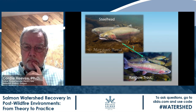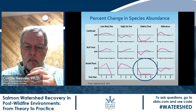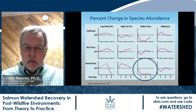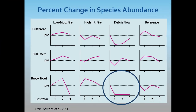Here's an example from work by Clint Sestrich and others in Montana, looking at the response of two native species — westslope cutthroat trout and bull trout — as opposed to the invasive brook trout. In the most disturbed system with debris flows, the brook trout population declined and never recovered. But the two native species declined initially and then came back. This suggests our native species are well-adapted and have the capacity to respond to large-scale events — it's not necessarily a disaster; they're well-adapted to responding relatively quickly to these types of events.